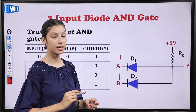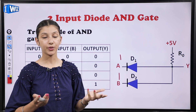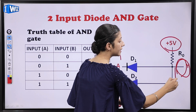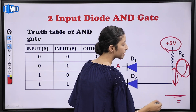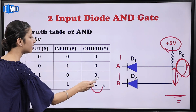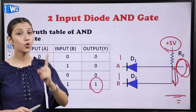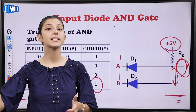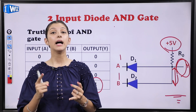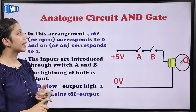When A=1 and B=1 — both diodes become reverse biased and do not conduct. The voltage at Y with respect to ground will be 5V — that is high, Y = 1. So in AND gate, only when all inputs are high do we get a high output. Even if one input is low, the output is 0. This applies regardless of how many inputs are connected — all must be high for output to be high.